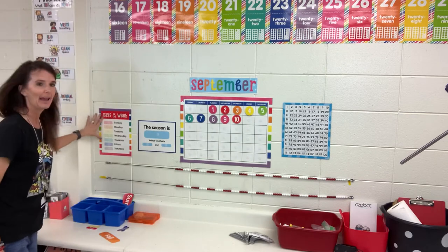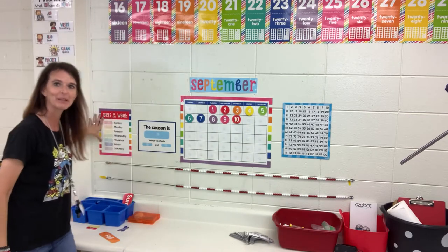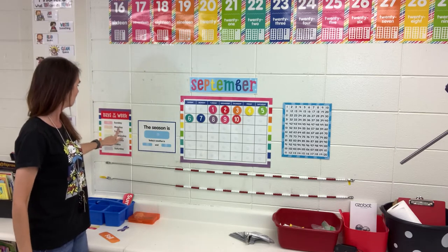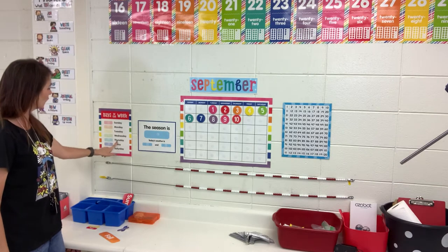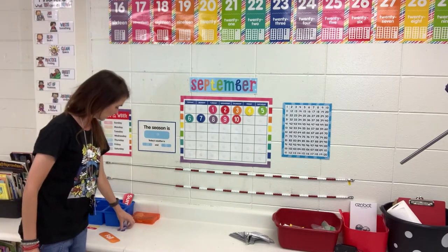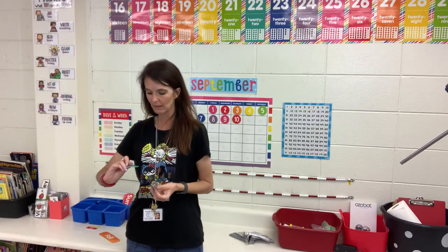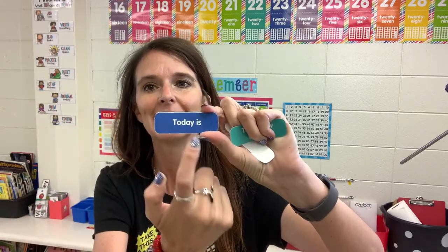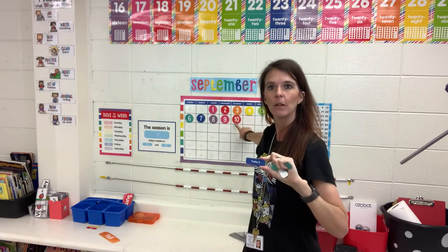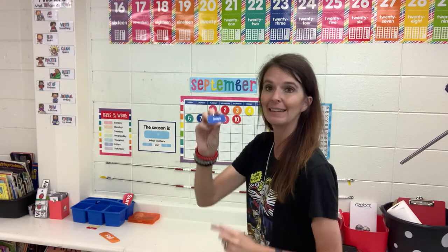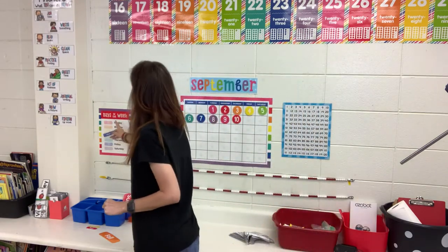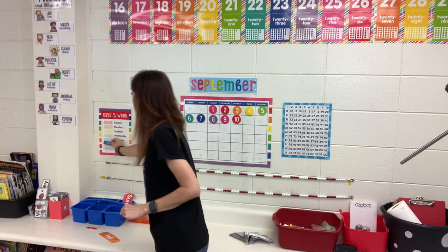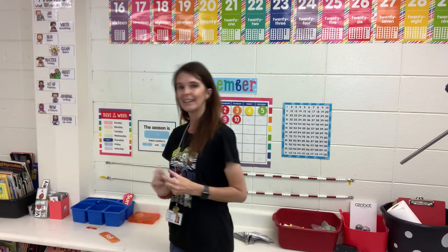Over here I have the days of the week. The days of the week are Sunday, Monday, Tuesday, Wednesday, Thursday, Friday, Saturday. So do you know what today is? This is a little marker that we're gonna put where it says 'today is' — what day of the week is today? Well if I look at my calendar, today is Thursday. So I need to find Thursday on the days of the week chart and put 'today is' next to Thursday. Sunday, Monday, Tuesday, Wednesday, Thursday — today is Thursday.